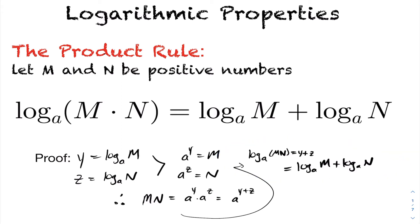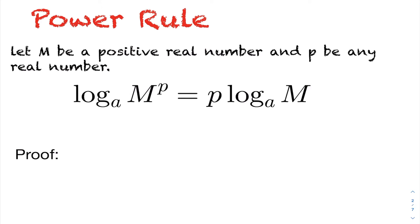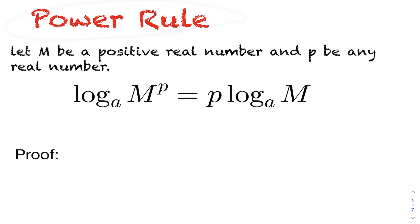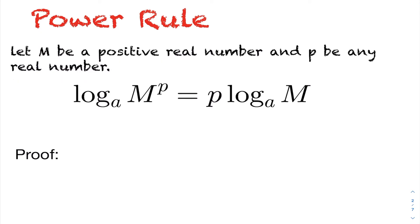For our next property, we want to look at the power rule. We let m be any positive real number and p be any real number — it can be negative as well. We want to show that log base a acting on m to the power of p is equal to p times log base a of m. The exponent p can be dropped down and the operation becomes multiplication.